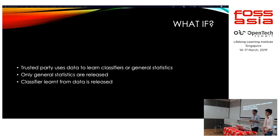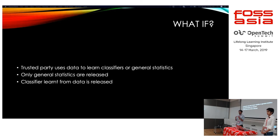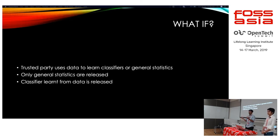So what are the possible ways to release data? One is using a trusted party — you give your data to a trusted party to learn a classifier or general statistics. The second way is to only give out general statistics. The third way is to release only the classifier learned on your own data rather than releasing the raw data. Now we'll see if even these approaches are secure or not.